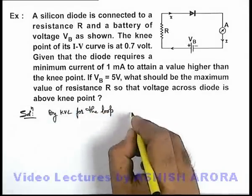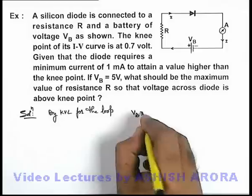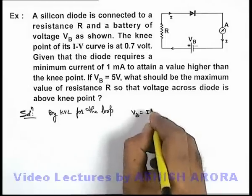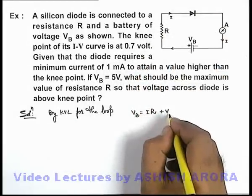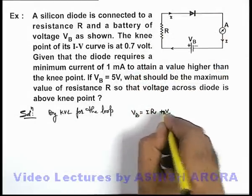Here we can write battery voltage is equal to the potential drop across the resistance and the voltage across the diode, which will be at knee point.